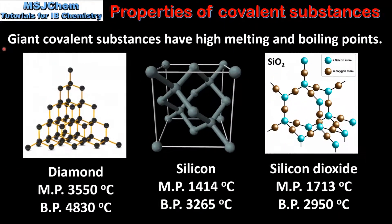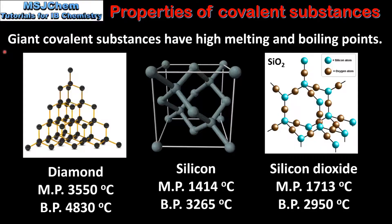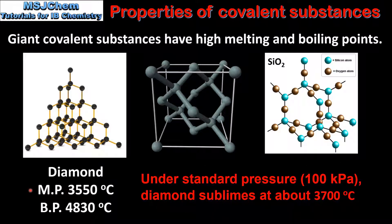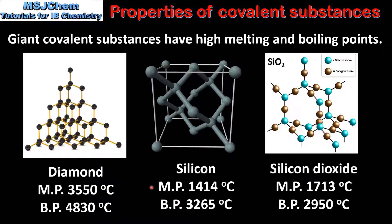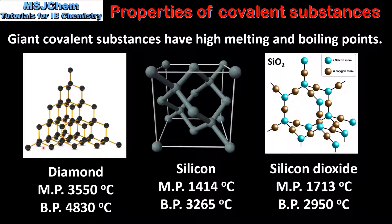Next we look at the melting points and boiling points of giant covalent substances. Compared to molecular compounds these tend to have high melting and boiling points. For example, diamond will melt at approximately 3600 degrees C and boil at approximately 4800 degrees C. The values for silicon and silicon dioxide are also quite high. The reason for these high melting and boiling points are the strong covalent bonds that exist between the atoms. To melt a giant covalent substance you have to break the covalent bonds between the atoms, which takes a lot of energy.